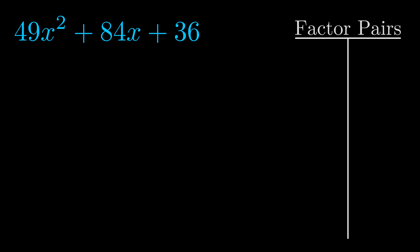Now once we have this factor pair, what we want to do is use it to split up the b value.